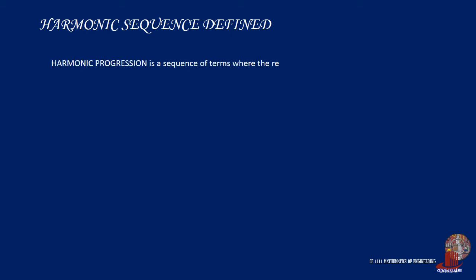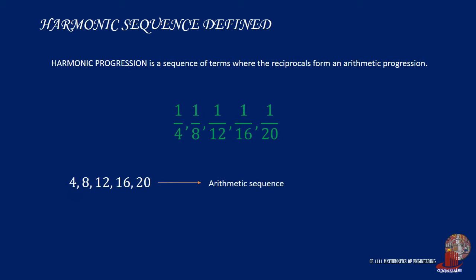A harmonic progression, or HP, is defined as a sequence of real numbers which is determined by taking the reciprocals of the arithmetic progression that does not contain zero. In the harmonic progression, any term in the sequence is considered as harmonic means of its two neighbors. Suppose a harmonic sequence of one-fourth, one-eighth, until one-twentieth. By observing the denominators or simply taking the reciprocals, an arithmetic sequence is noted.